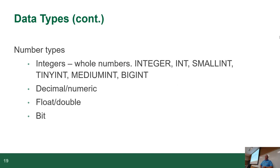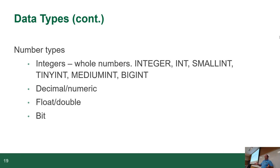We have numbers, and there are integers, numerics, floats, and bits. Integers, depending on the database engine, can be qualified as small int, int, and big int. Different database engines have different limitations. For example, big int in Postgres will give you a 27-digit integer. MySQL does something a little different — it has a sized integer where you can specify precision.